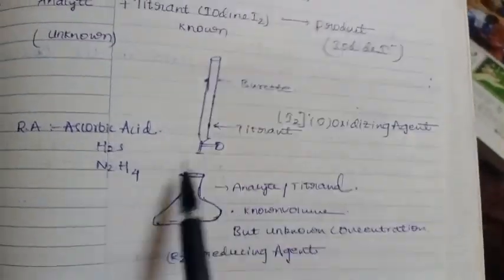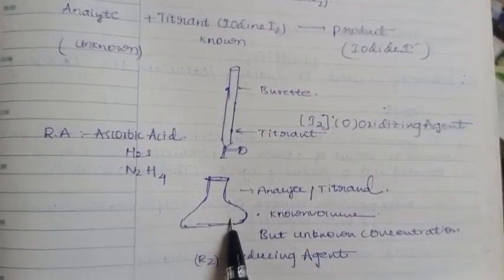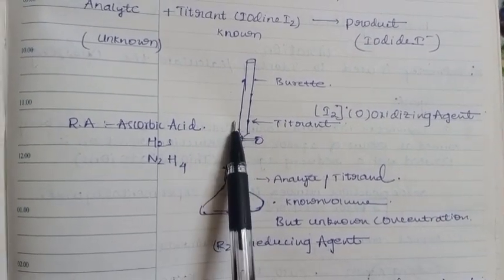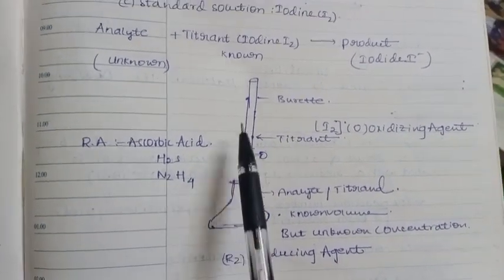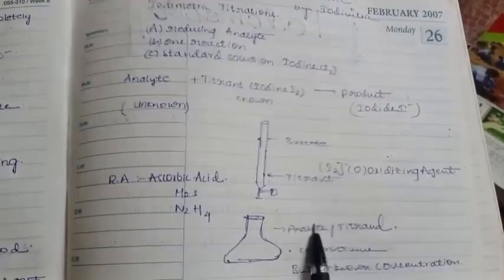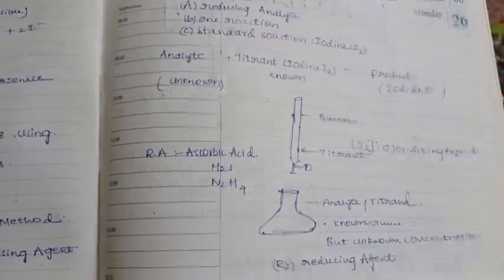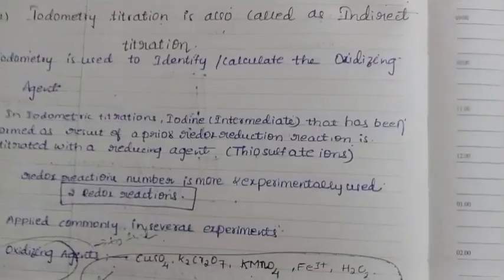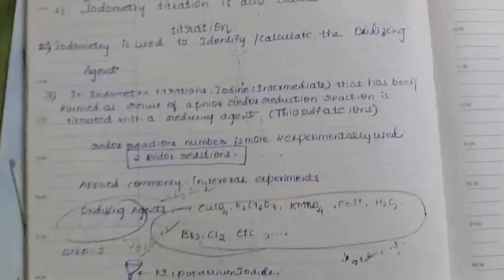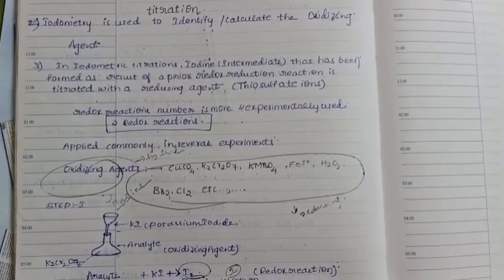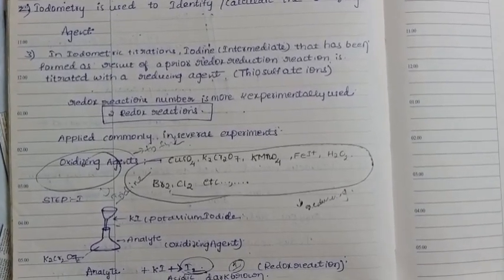So, iodimetry is used for reducing agent identification. This is completely about iodimetry. Thanks for watching — please make sure to like the video.